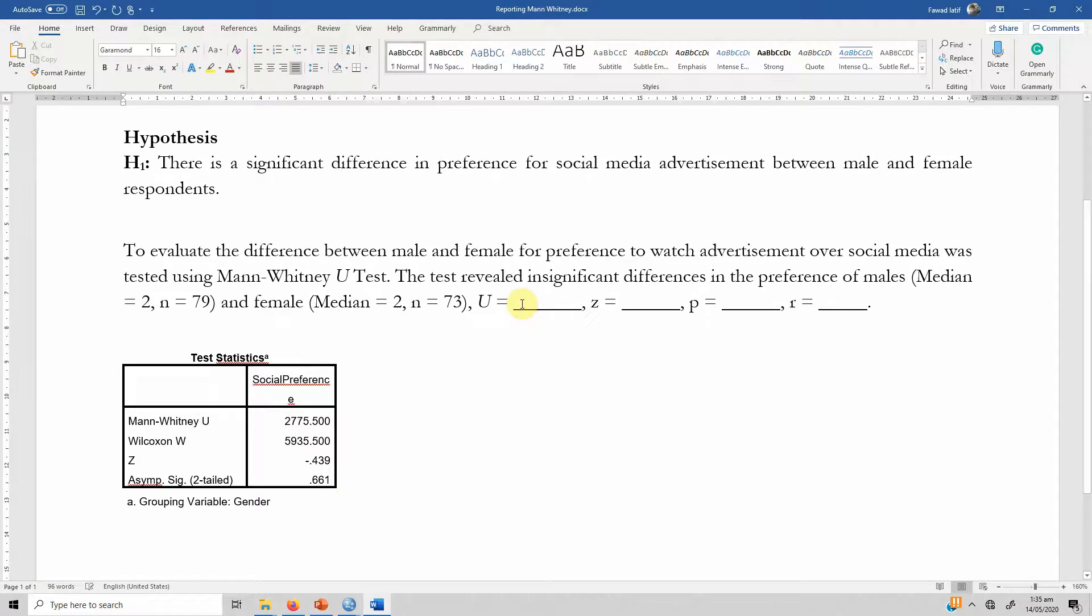It goes here and what is the U value? It's 2775.500. The Z value is minus 0.439. The P value is equal to 0.661. What is this R?